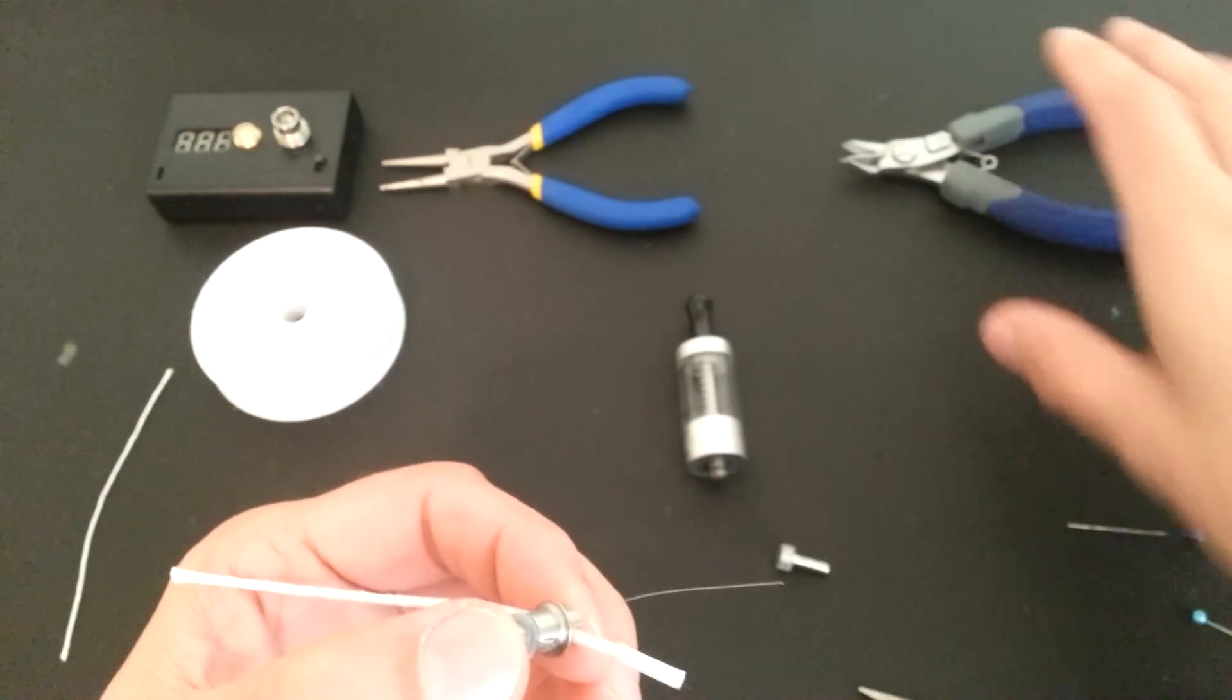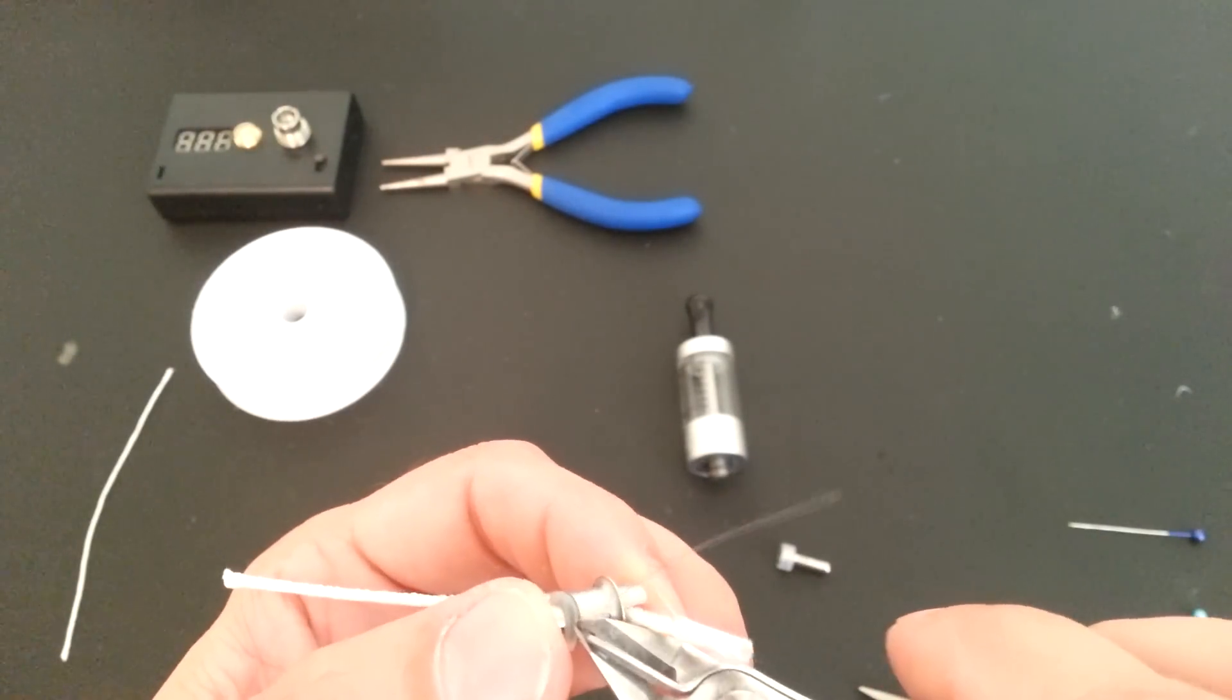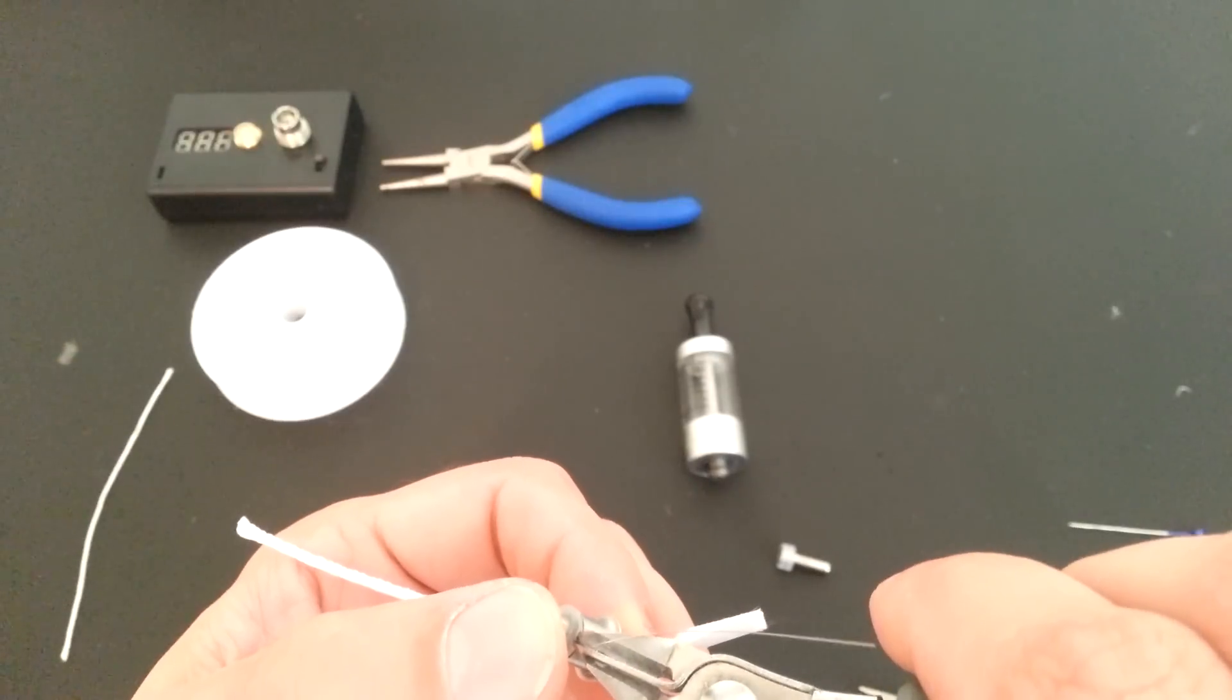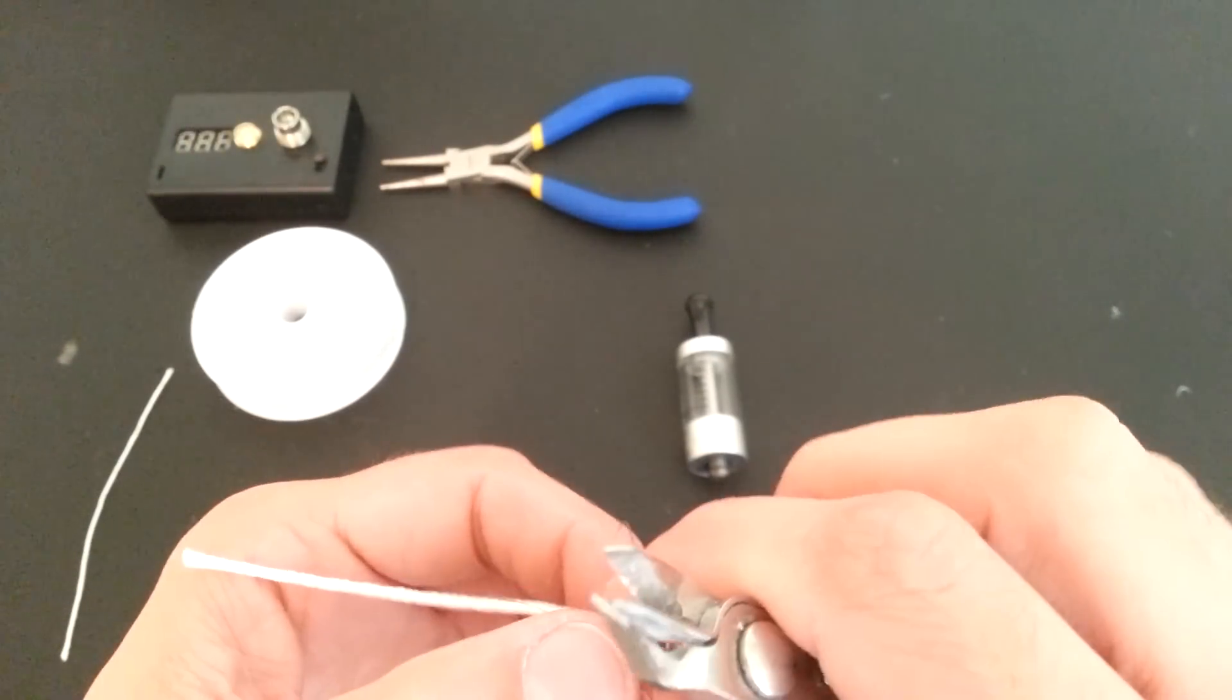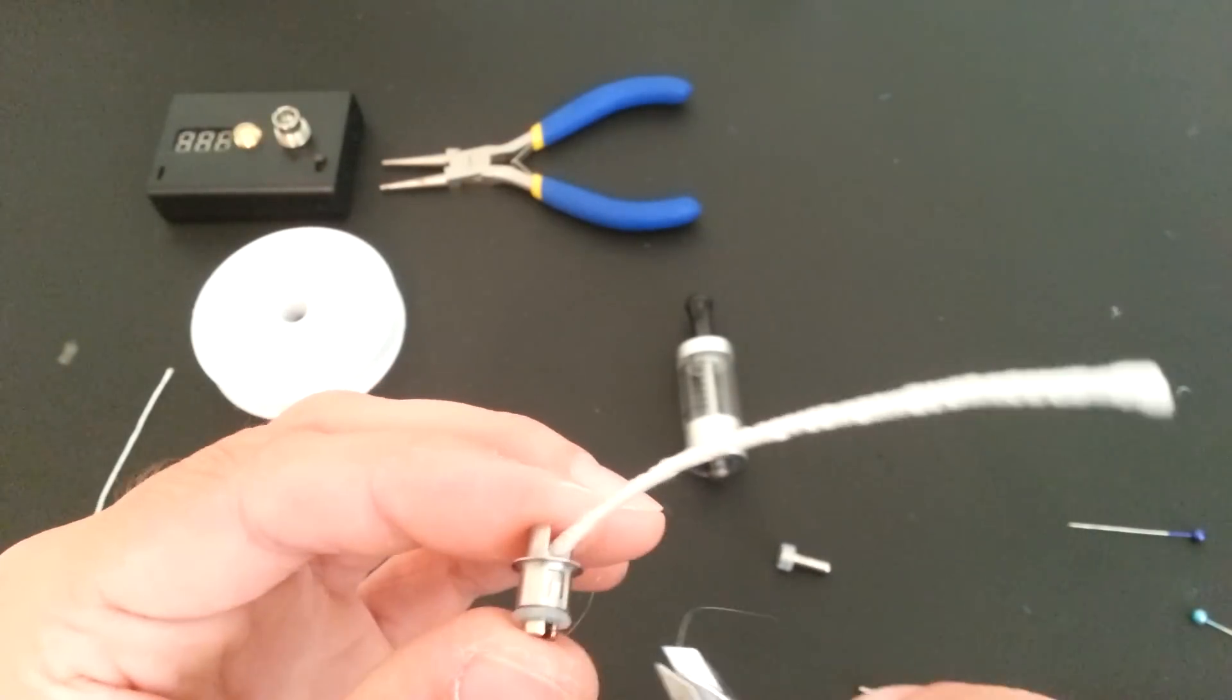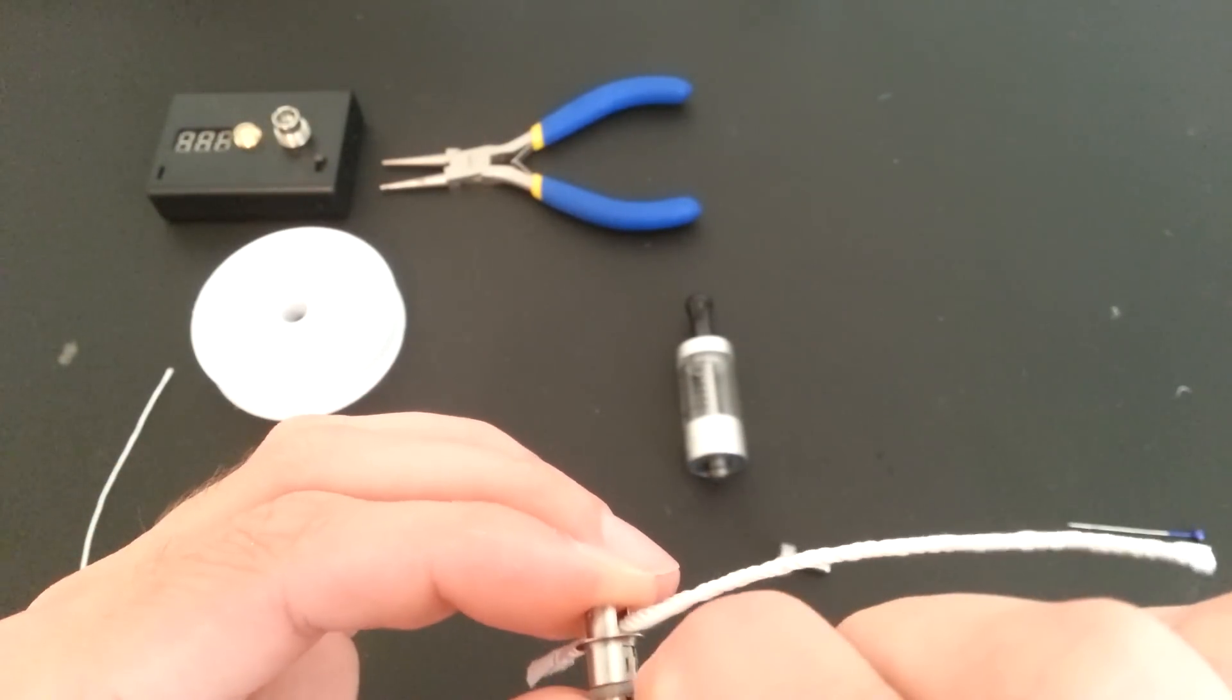Take a moment to remove the excess coil from this head. Get as close to that rubber grommet as possible. Try not to cut the grommet itself. Sometimes it can be a little bit tricky.